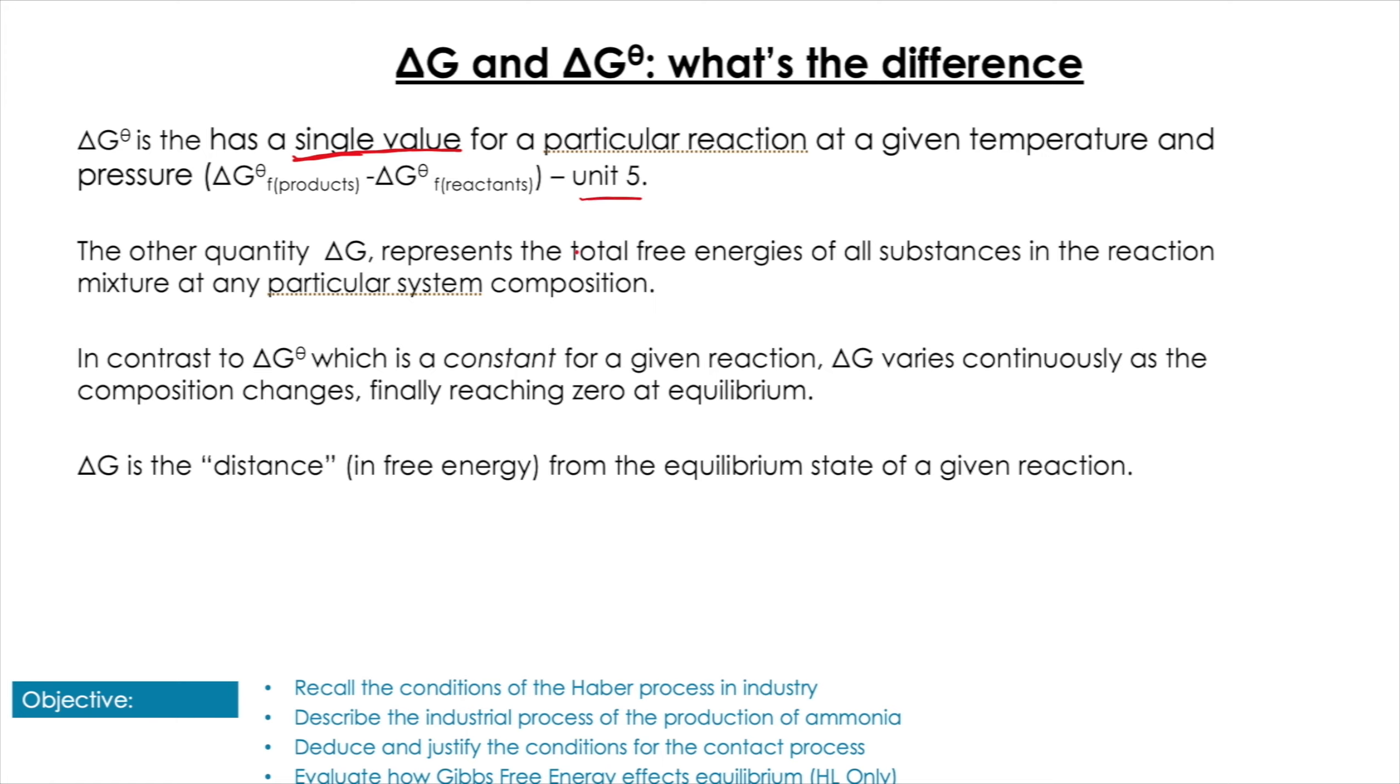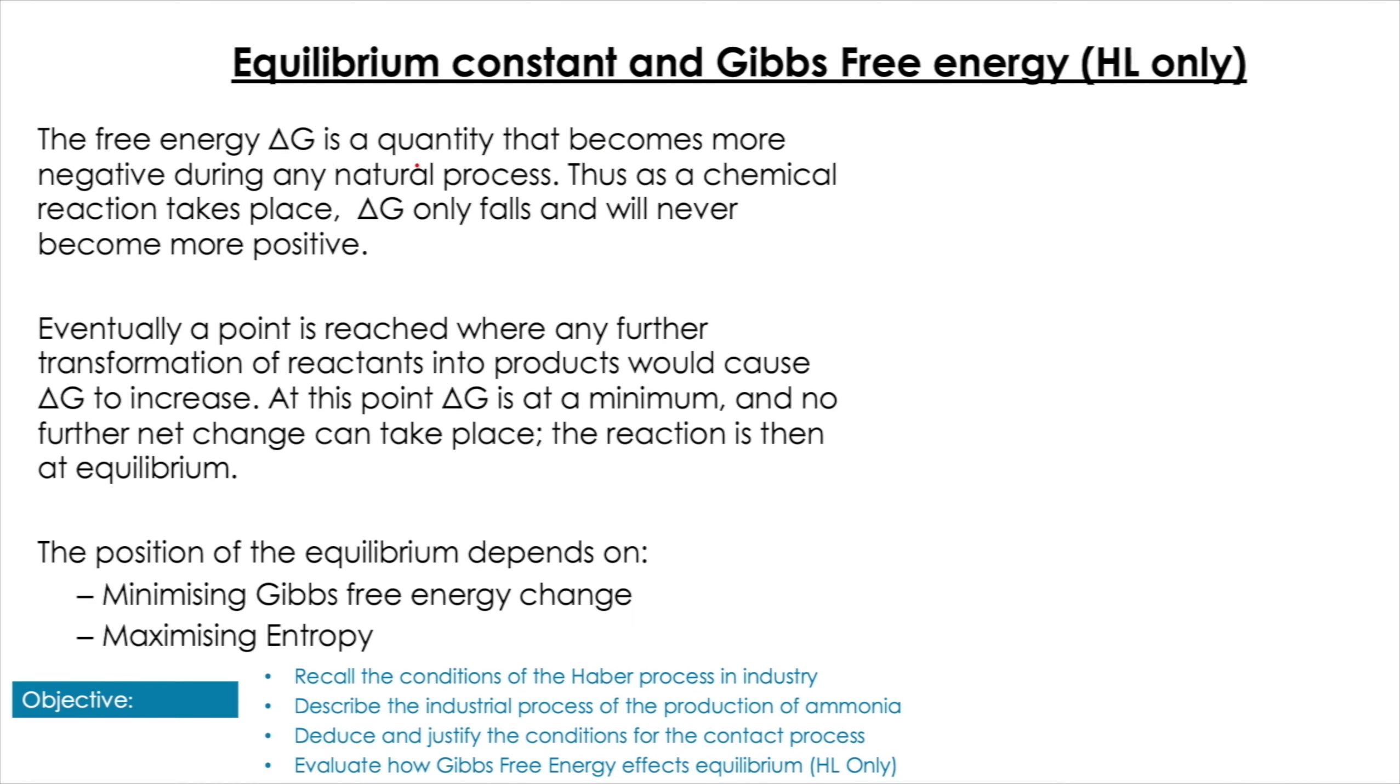So ΔG° is only constant for a given reaction. ΔG varies continuously as the composition changes, finally reaching zero at equilibrium. So this can help us understand why equilibrium is where it is, because the equilibrium is going to depend on two things: one, maximizing entropy as the universe likes to do, and two, minimizing Gibbs free energy change.